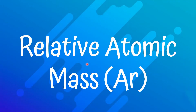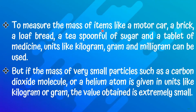Our first topic is relative atomic mass, and the symbol for relative atomic mass is Ar. To measure the mass of everyday items like a motor car, a brick, a loaf of bread, or tablet medicine, units like kilogram, gram, and milligram can be used. But if the mass of very small particles such as a carbon dioxide molecule or a helium atom is expressed in kilograms or grams, the value obtained is extremely small.